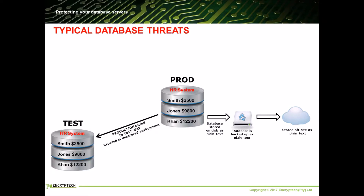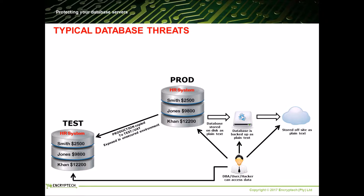A common practice within organizations is to copy production databases into test or UAT, which means sensitive data is taken from a secured environment to an unsecured environment. Anybody can access the data undetected where the database resides, where the database is backed up, and where it is kept at the offline storage facility. Anybody can view sensitive data in the test or UAT environment, as these environments typically have no security at all and passwords are generally soft and widely known.